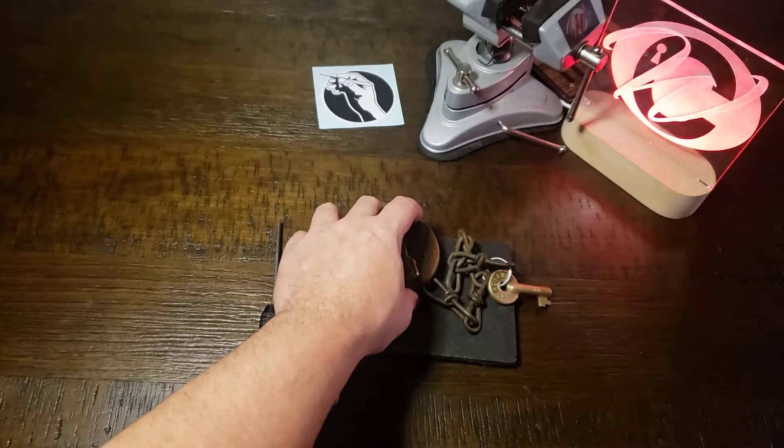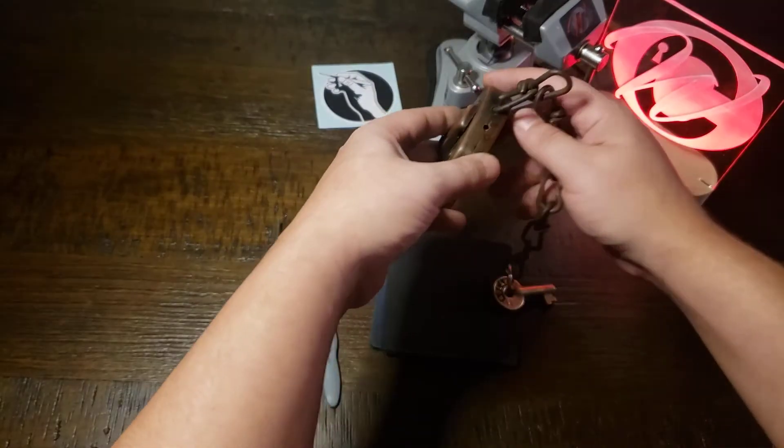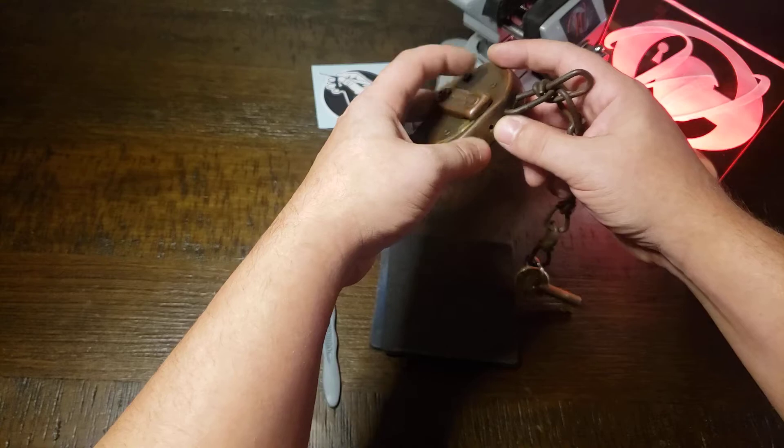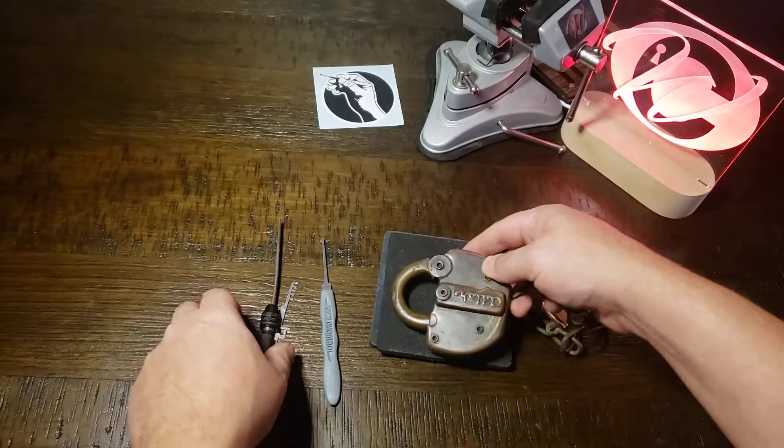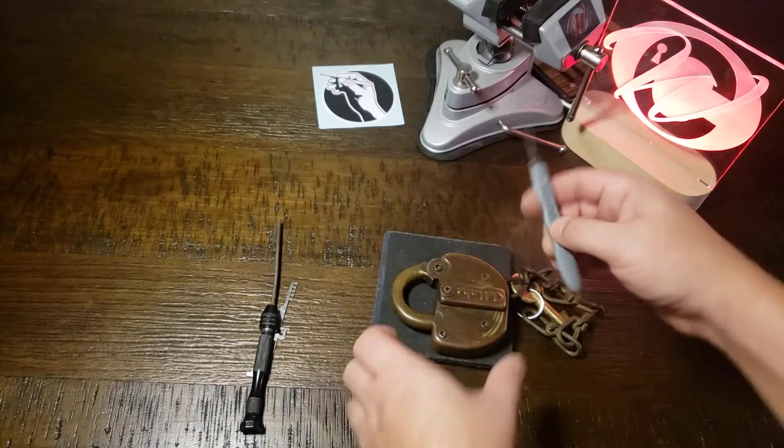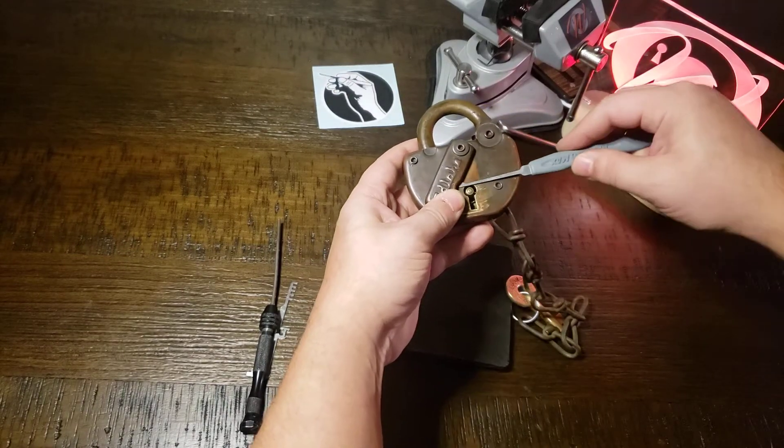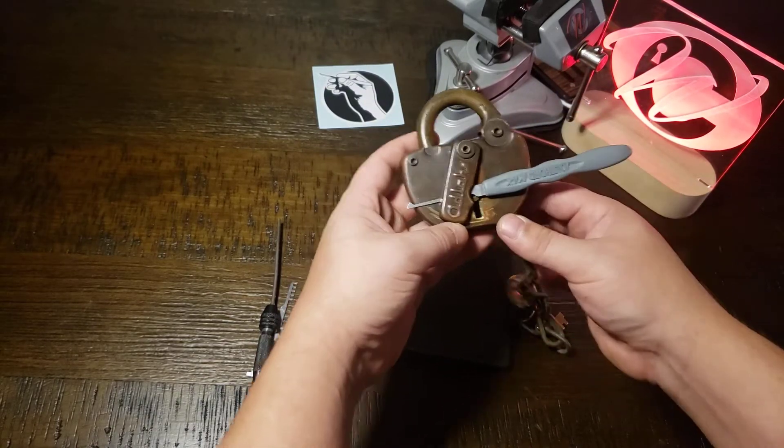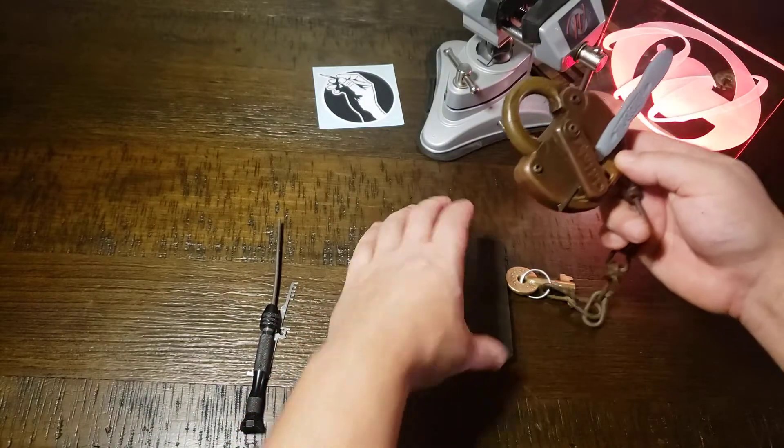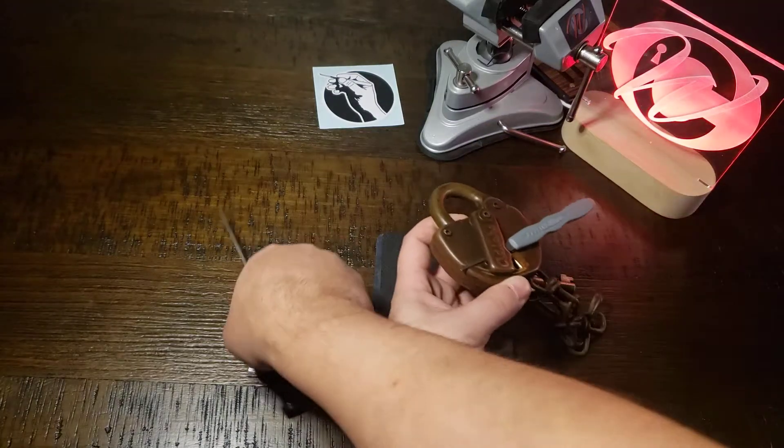I did discover a little drain hole or weep hole, and I can tension through that. So that's what I'm going to do. This diamond pick here is simply to hold that open, because it could get in your way and be annoying when picking this lock.